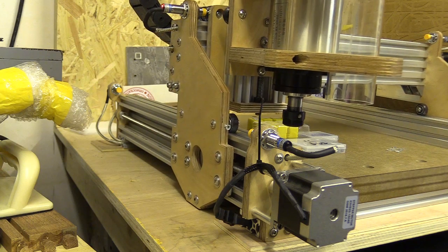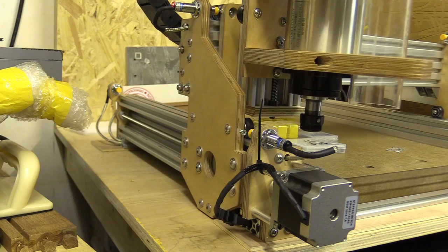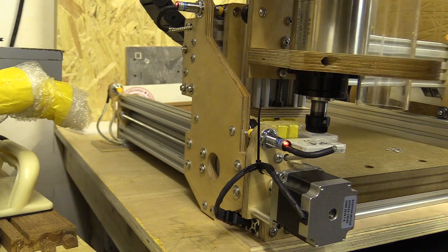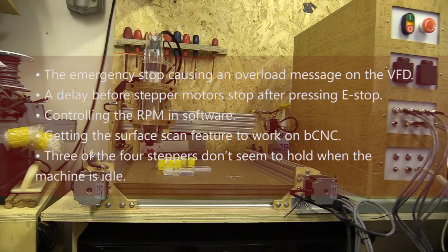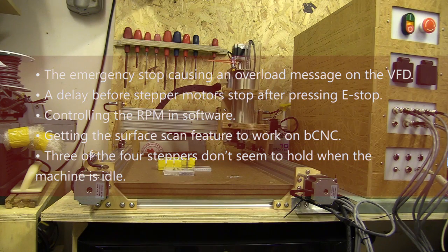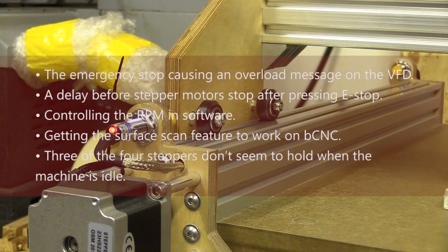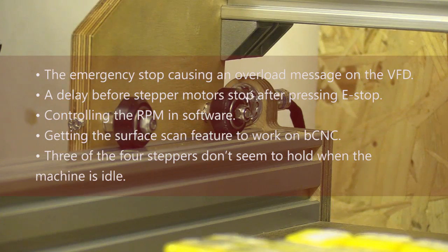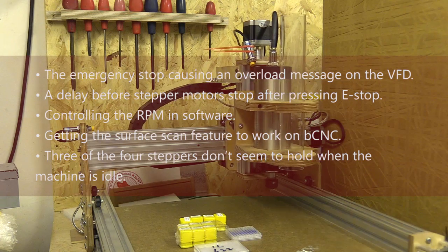The majority of the physical work is done and the machine and enclosure are now connected. There's still a few problems I need to solve, including the emergency stop causing an overload message on the VFD, controlling the RPM in software, getting the surface scan feature to work on BCNC, and also three of the four stepper motors don't seem to hold when the machine is idle.